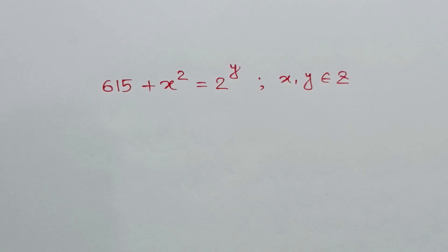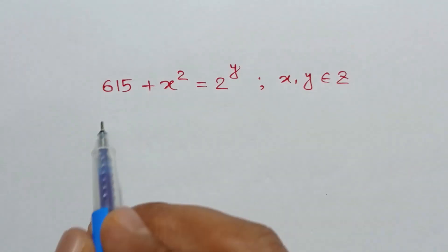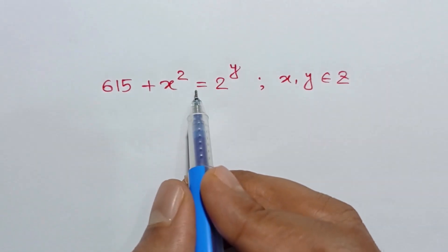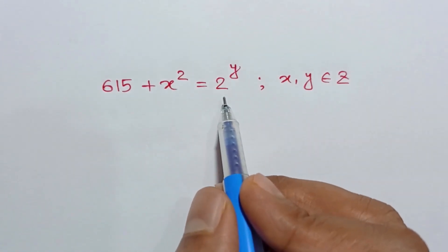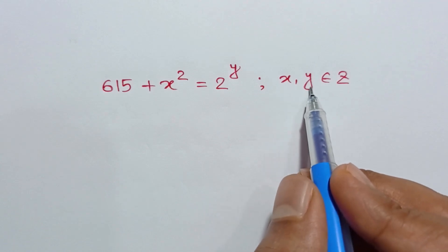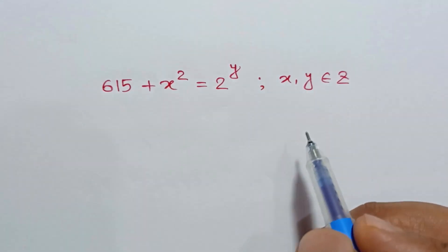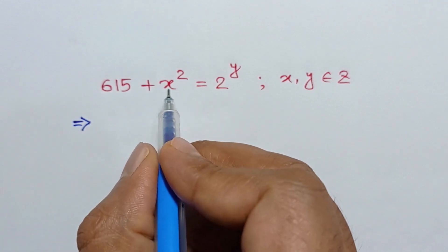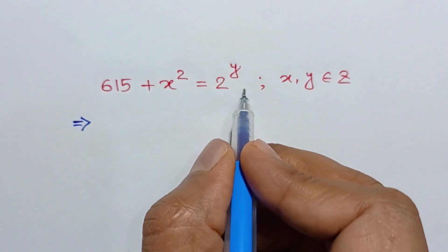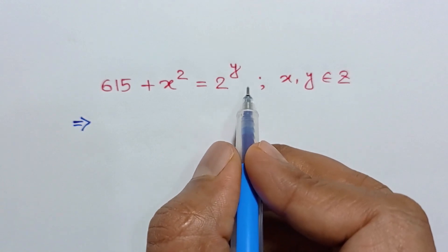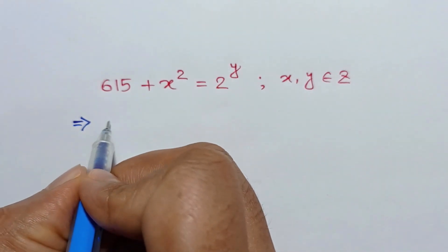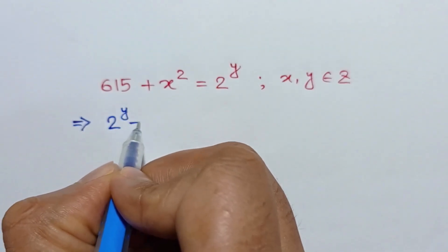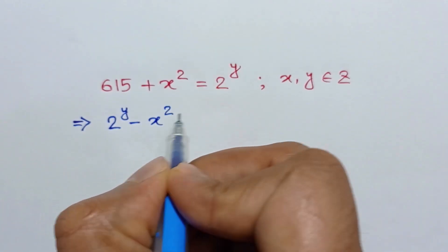Hi everyone. In this video I am going to show how to solve 615 plus x squared is equal to 2 to the power y, where x and y are integers. If we take x squared to the right side, we will have 2 to the power y minus x squared is equal to 615.